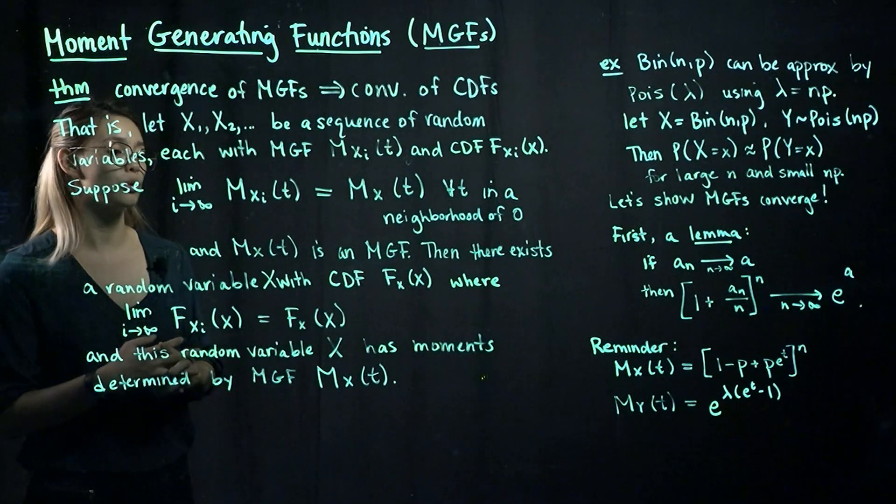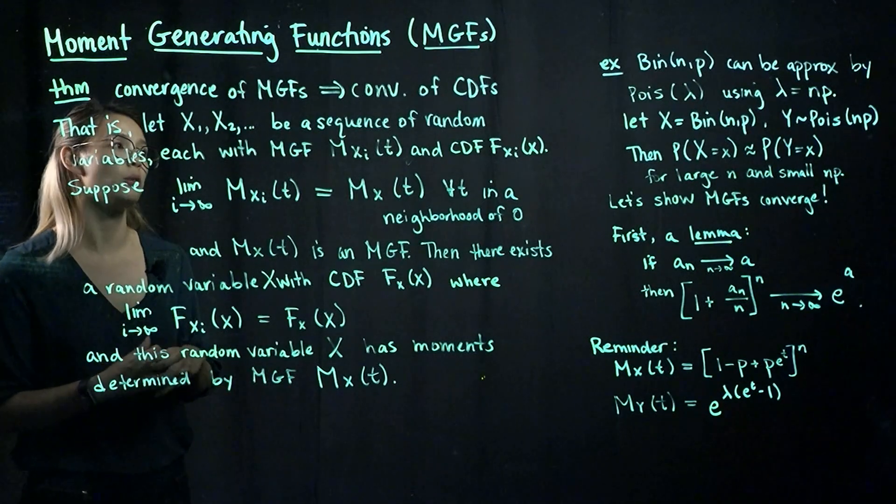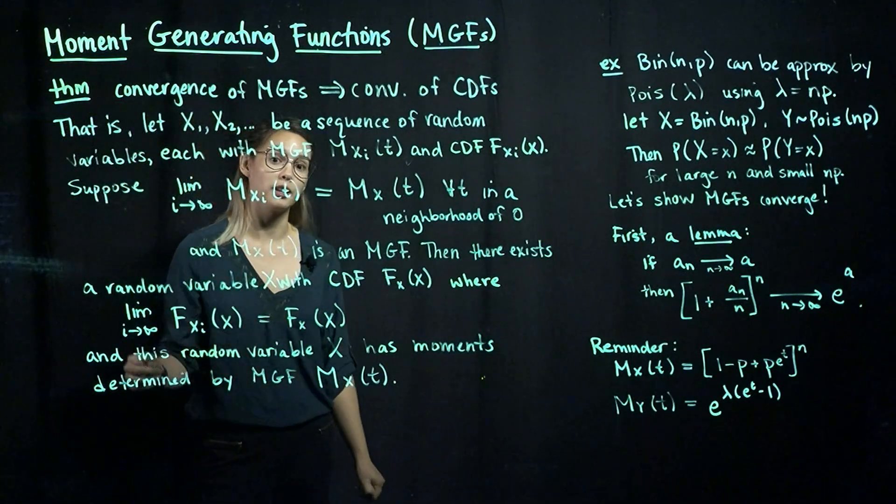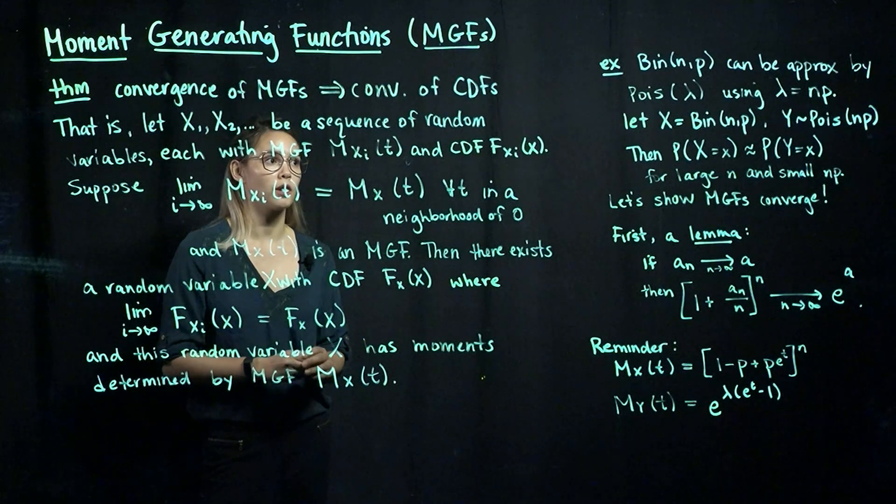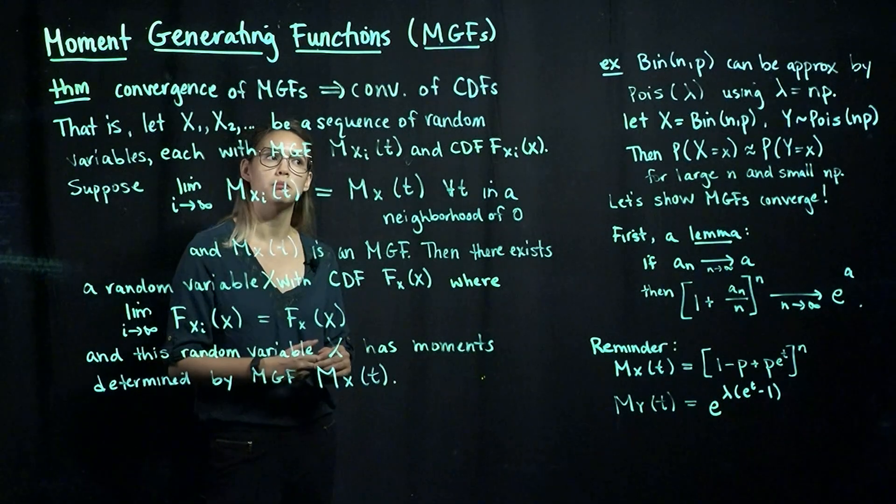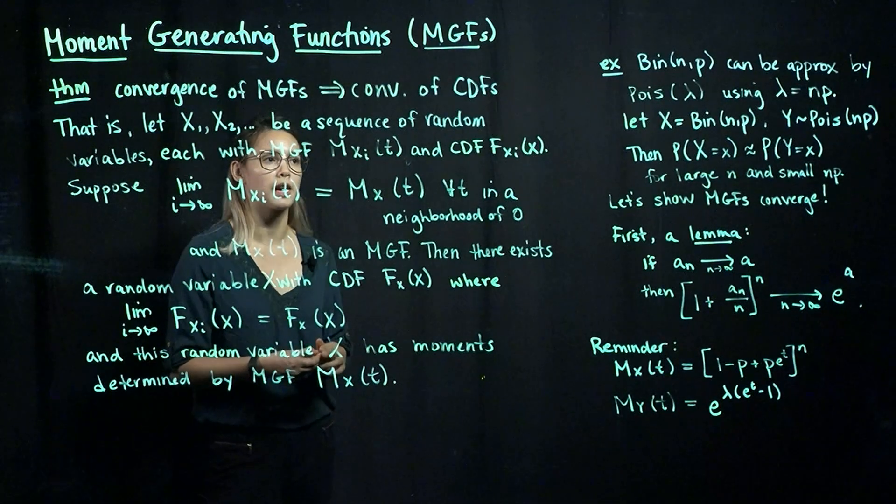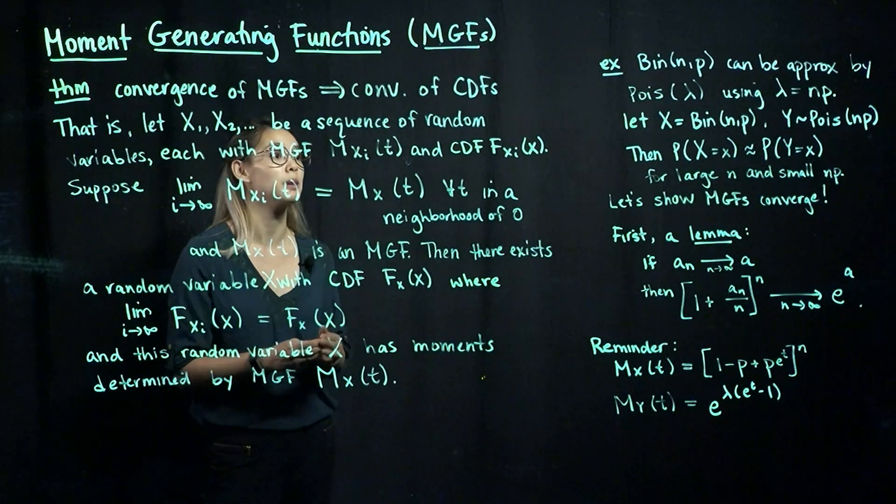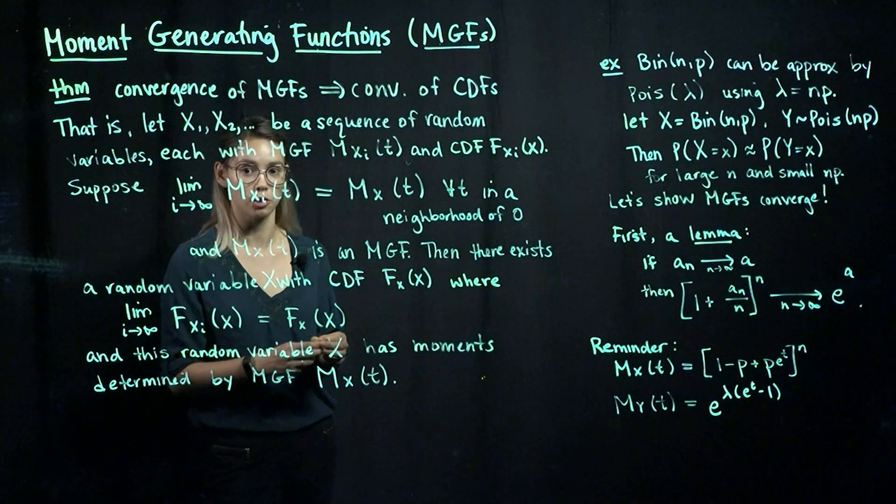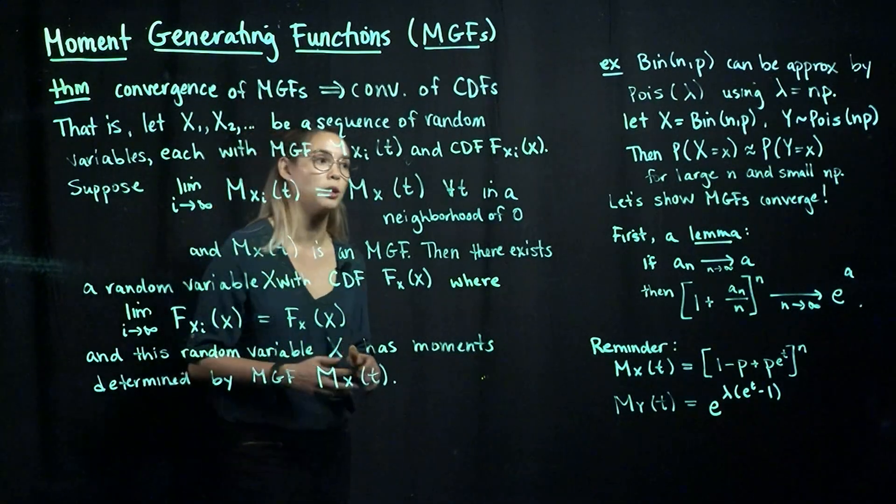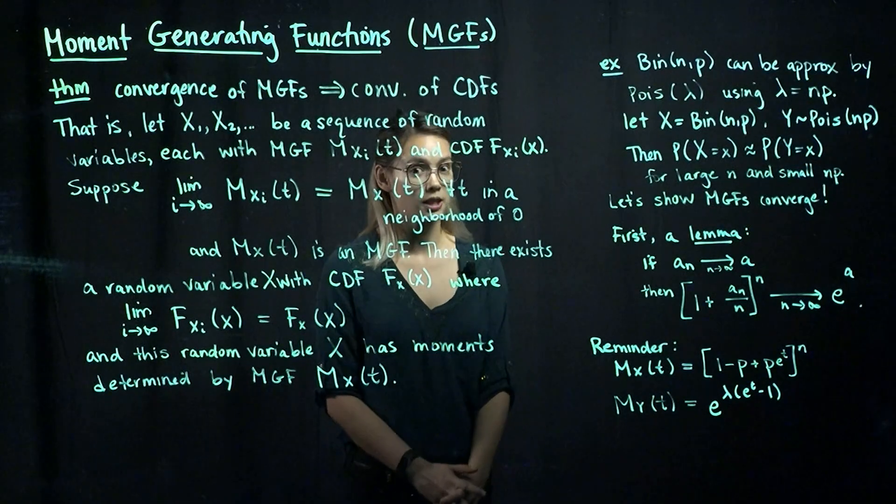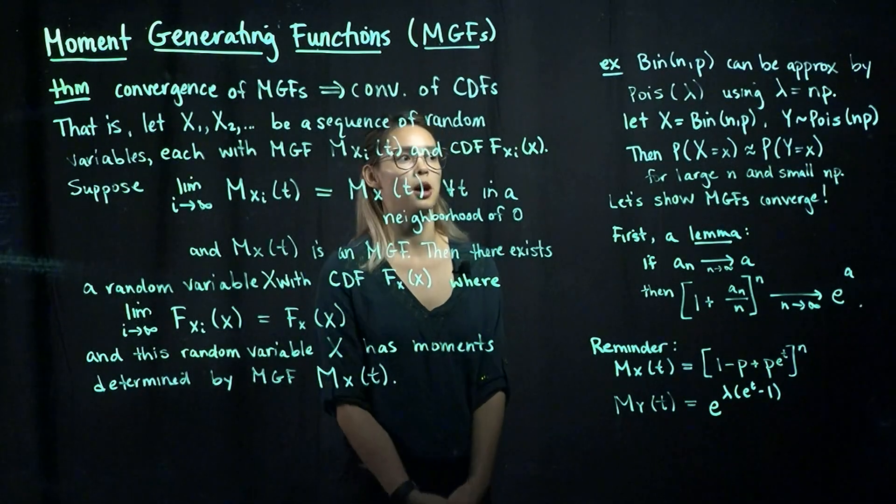We're not going to prove this theorem in general, but we're going to look at it in a specific case. Let's think about the case where we have a binomial distribution. If you've done some work in practice, then you know that a binomial distribution with parameters n and p could be approximated by a Poisson distribution with parameter lambda if we use lambda equals np.